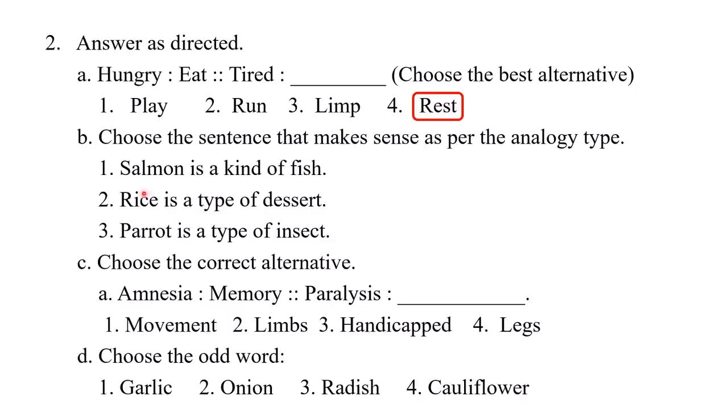B: Choose the sentence that makes sense as per the analogy type. Three sentences are given — we have to find the similarity. 'Salmon is a kind of fish.' 'Rice is a type of desert.' 'Parrot is a type of insect.' The right analogy is: 'Salmon is a kind of fish.'